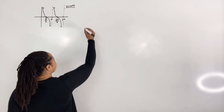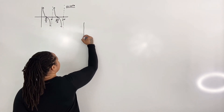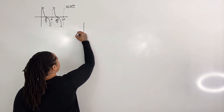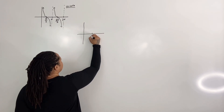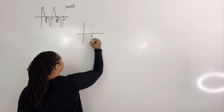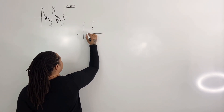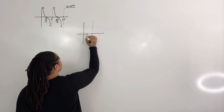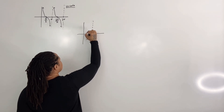So we restrict the domain from zero to pi. Let us redraw the graph of cotangent with the restricted domain. We have an asymptote at pi, and here we have pi over 2, and the graph is going to swing like this.